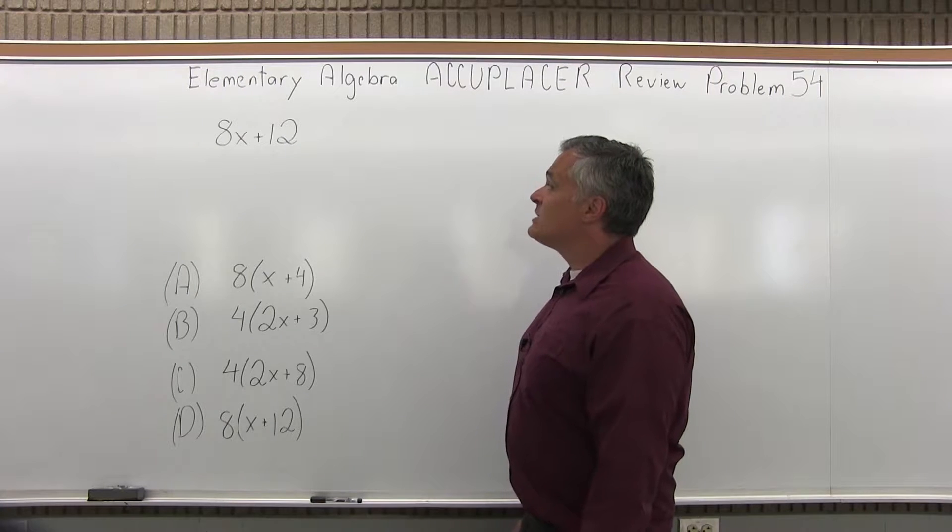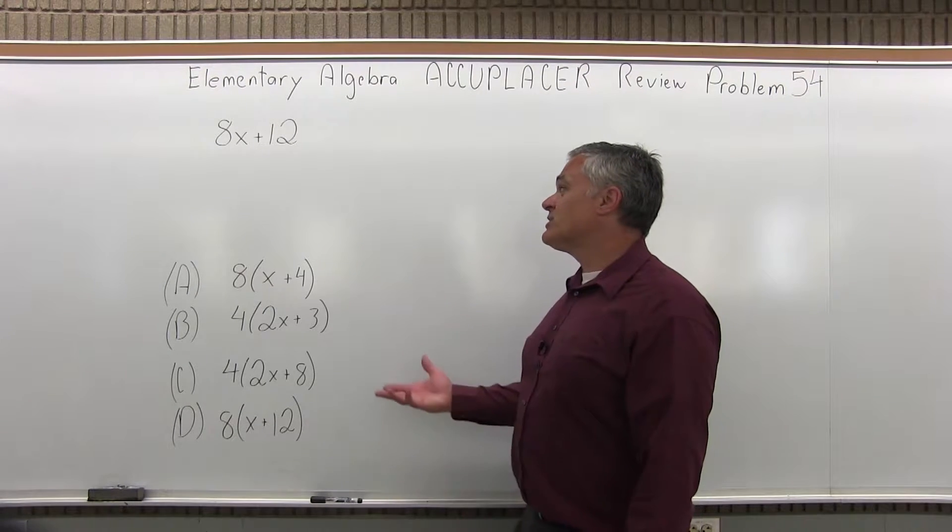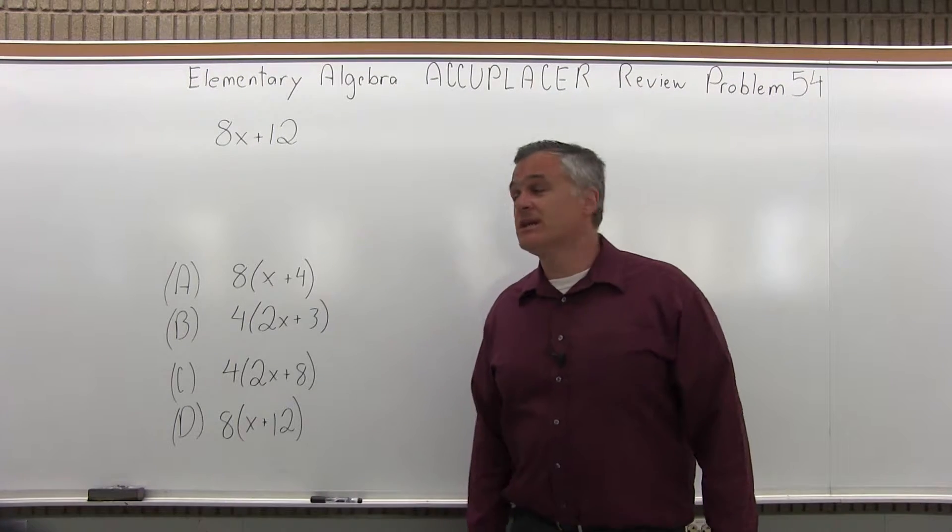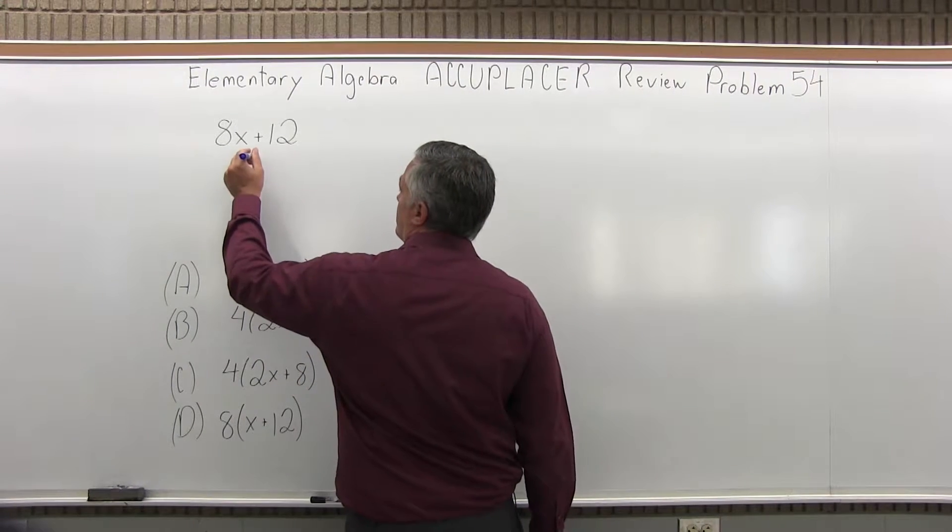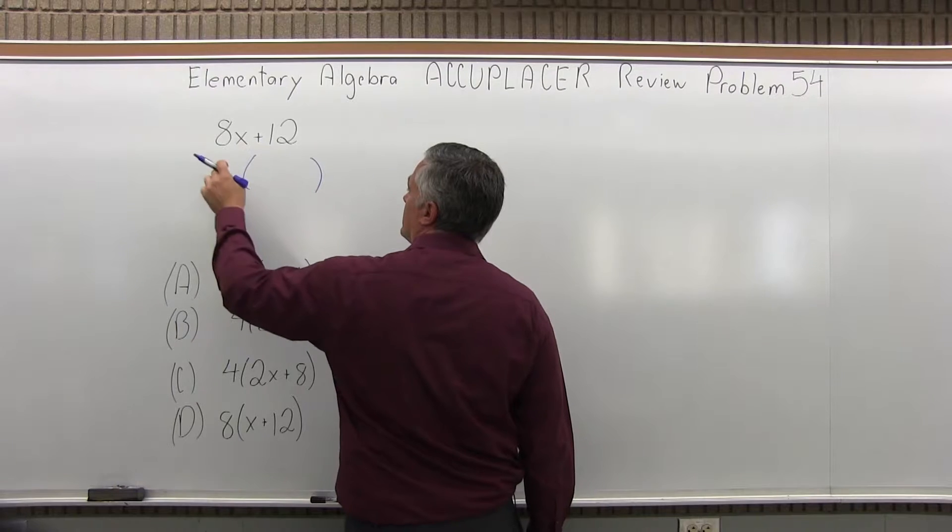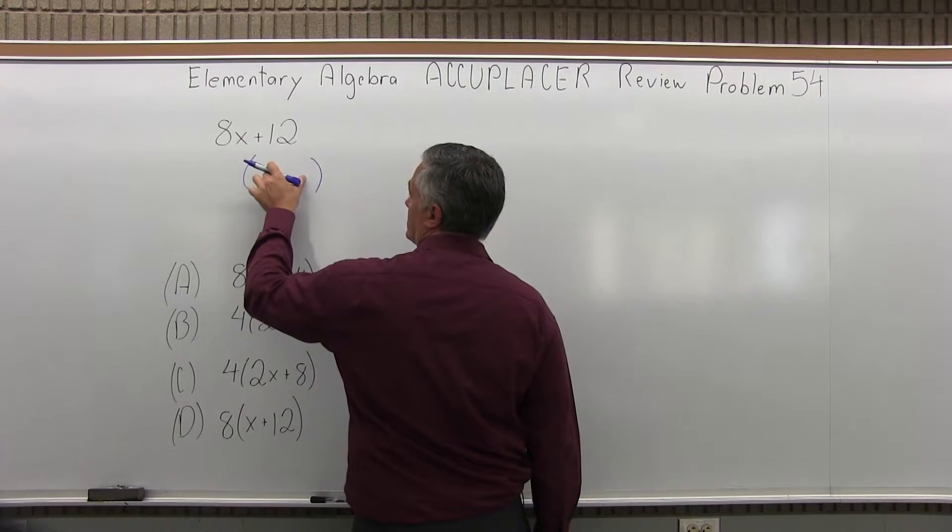We have 8x plus 12 and we want to match it with one of four given options. And what we have to do is make a set of parentheses, find something to put in front of the parentheses and see what's left inside.